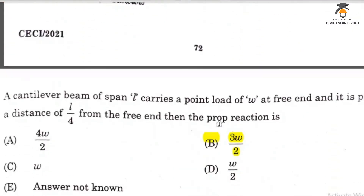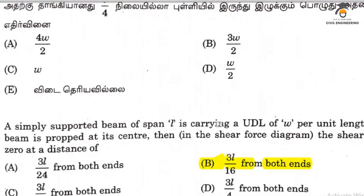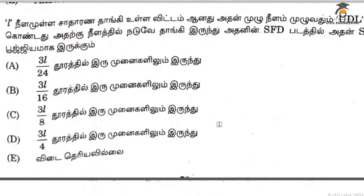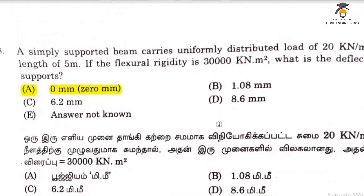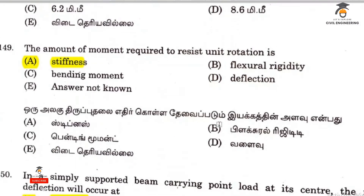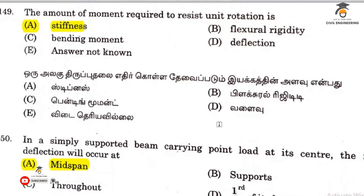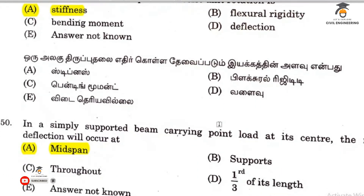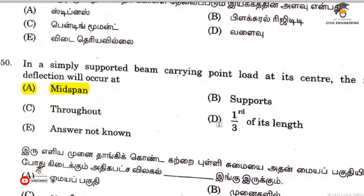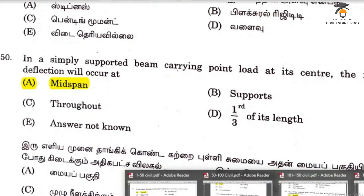Question 146 answer is 3WL by 2. Question 147 is 3L by 16. Question 148 answer is 0. Question 149 relates to stiffness. Question 150 is mid-span. Concentrated load gives maximum minimum deflection at mid-span.